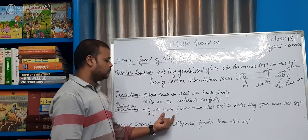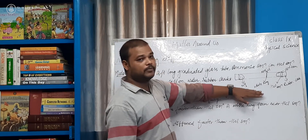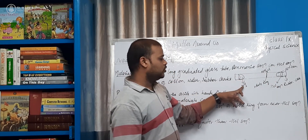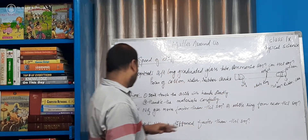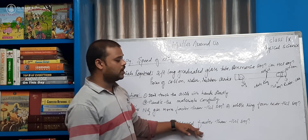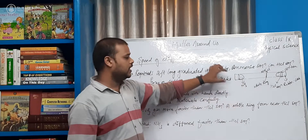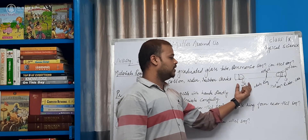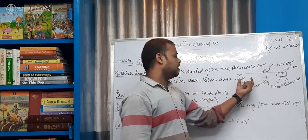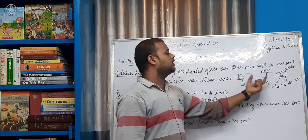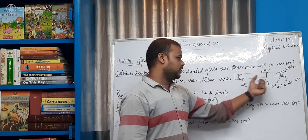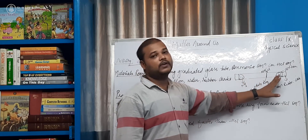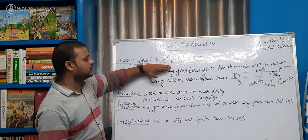Observations: NH3 gas moves faster than HCl. We can clearly observe that the white ring is forming nearer to the hydrochloric acid solution. That means ammonia is moving faster than the hydrochloric acid. The concept covered here is that ammonia diffuses faster than HCl. NH3 is moving faster than HCl, so we can see that the speed of diffusion in gases is faster.